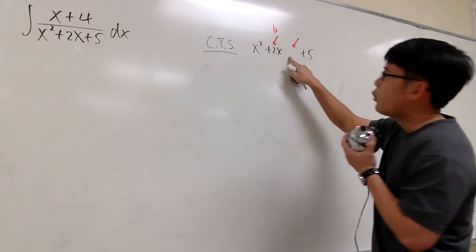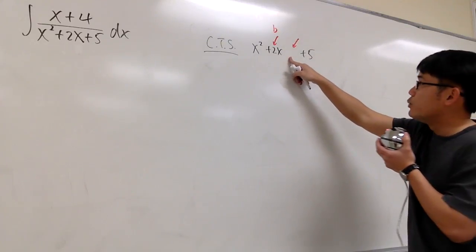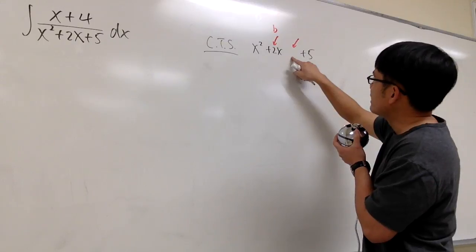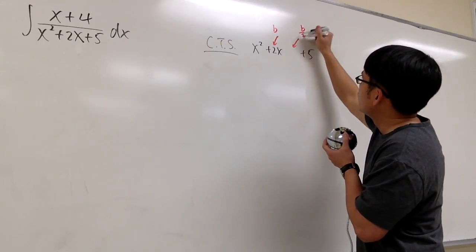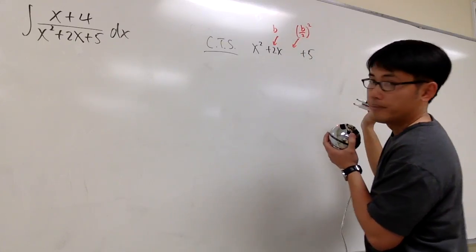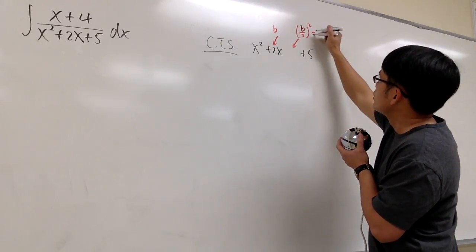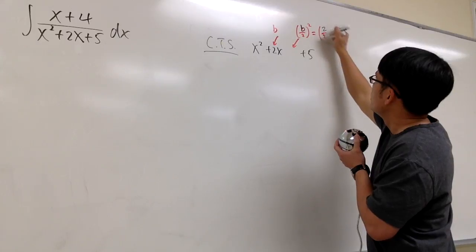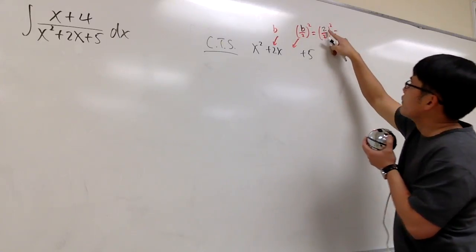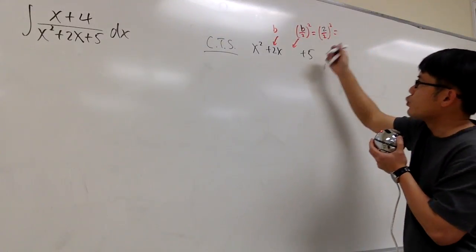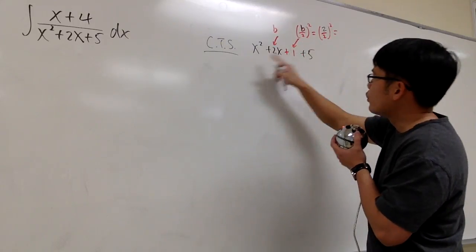And then I'm going to worry about what number I have to add, and there's a formula for that. We have to add a number, which is going to be b over 2 squared. And we already talked about b is equal to 2, so this is going to be 2 over 2. And you square that, and of course 2 over 2 is 1, 1 squared, which is 1, so that means I have to add 1 right here.